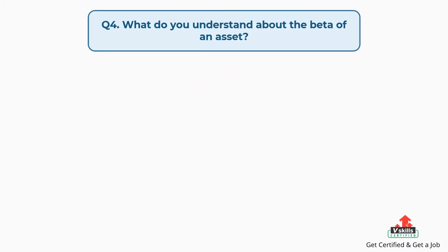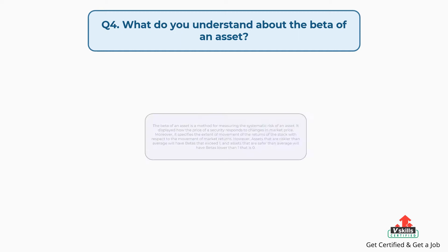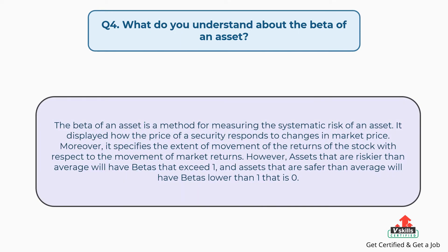Question number 4: What do you understand about the beta of an asset? The beta of an asset is a method for measuring the systematic risk of an asset. It displays how the price of a security responds to changes in market price. Moreover, it specifies the extent of movement of the returns of the stock with respect to the movement of market returns. However, assets that are riskier than average will have betas that exceed 1, and assets that are safer than average will have betas lower than 1, that is closer to 0.